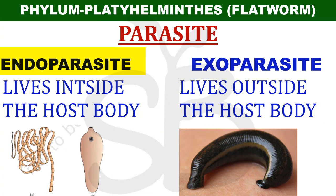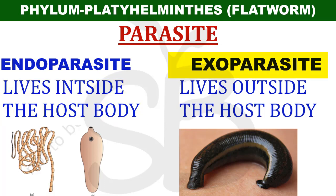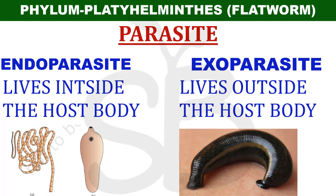Endoparasites and exoparasites. Endoparasites are living inside the organism's body. Exoparasites are living on the outside - examples are leech, lice, and similar organisms. Endoparasites include tapeworm, fasciola - these are platyhelminthes found in animals and humans.